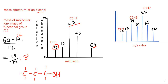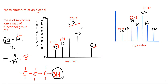Any fragment outside of your alkyl groups must contain the specific element that makes your compound not a hydrocarbon — in this case, oxygen. So the fragment at 17 must contain oxygen. We already know OH has mass 17, so the fragment of 17 is the OH ion.